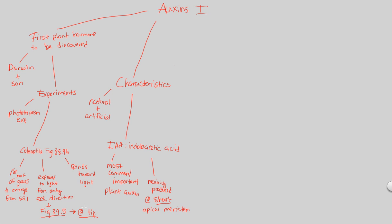The shoot apical meristem is a point of lots of cell division and growth. How is that growth governed? It's guided by IAA — indoleacetic acid — which is an auxin, a plant hormone that allows for successful plant growth.